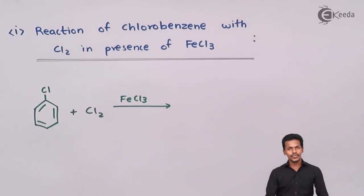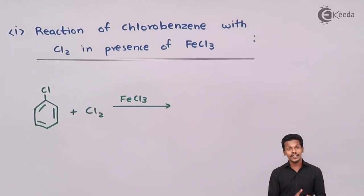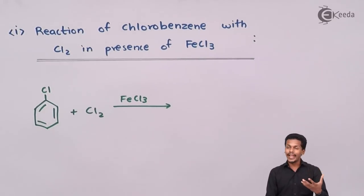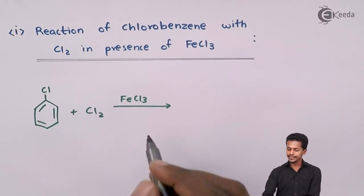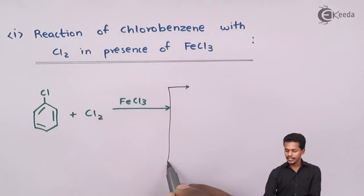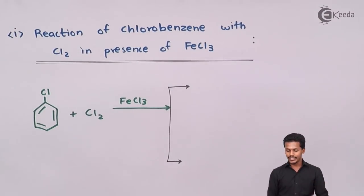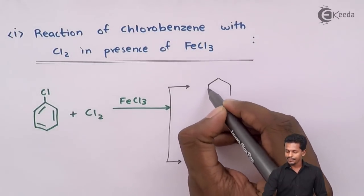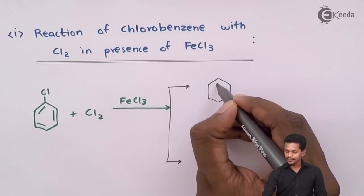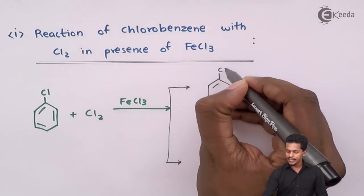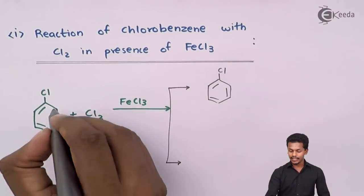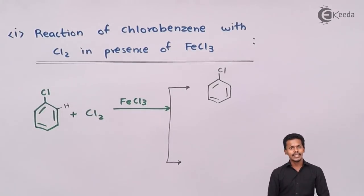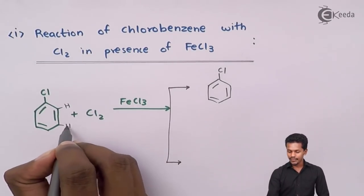We observed in the previous lecture that most aromatic compounds, if they consist of an electron-donating group like Cl, basically exhibit ortho and para directing behavior. So that is the reason there are two possibilities we could get here. The two possible structures arise because chlorobenzene consists of five hydrogen atoms on the aromatic ring.